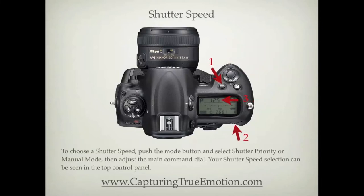To choose a shutter speed, push the Mode button and select Shutter Priority or Manual Mode, then adjust the main command dial. Your shutter speed selection can be seen in the top control panel.